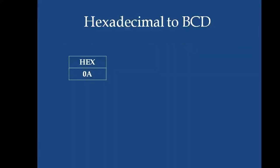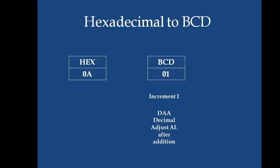We will see an example. Given a hexadecimal number 0A, the corresponding BCD number 00 is initialized. Now, BCD is incremented by 1 and then DAA operation is performed. DAA is decimal adjust AL after addition. Since the BCD is 01, it is not more than 9, so no operation will be performed.